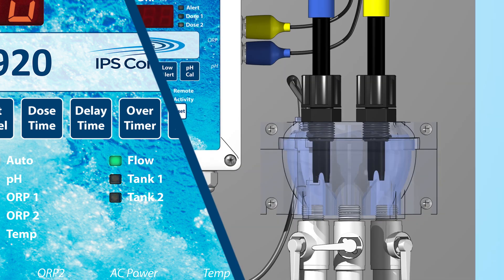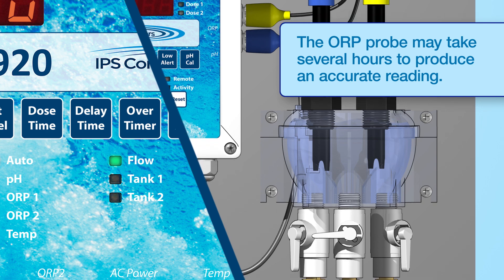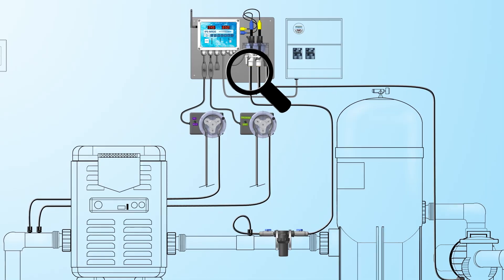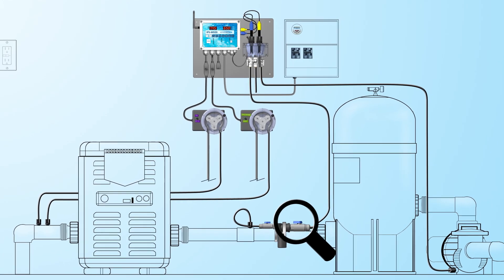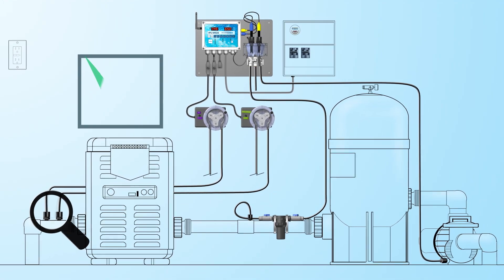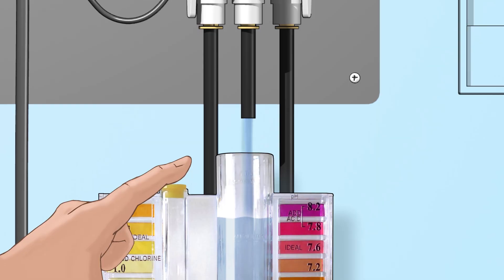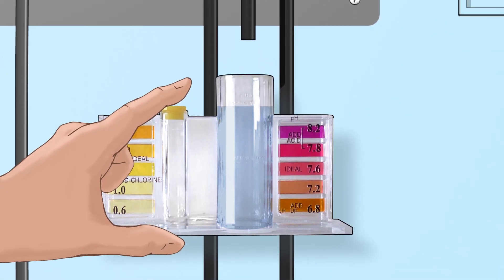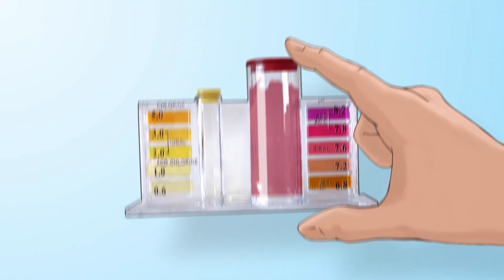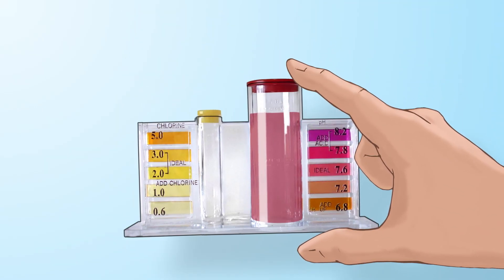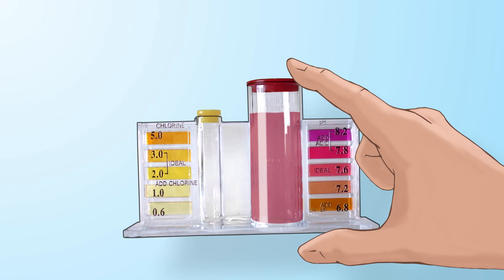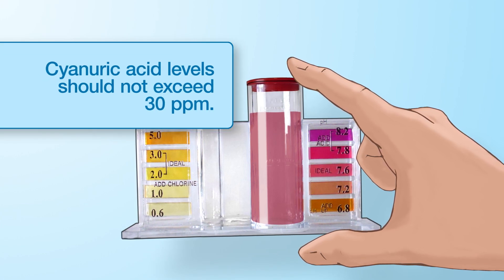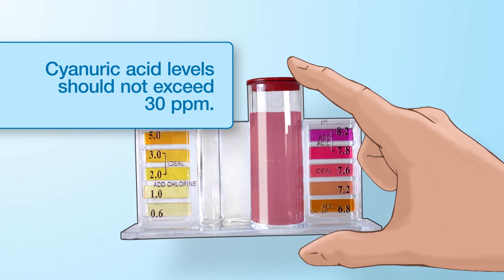Water should pass over the pH and ORP sensors to allow for accurate readings from the pool or spa. Make sure there are no leaks in the system. Using a DPD test kit, open the valve on the center port and test the water. Manually adjust the water in the pool to the desired pH and sanitizer levels. For best results, the cyanuric acid levels should not exceed 30 parts per million.